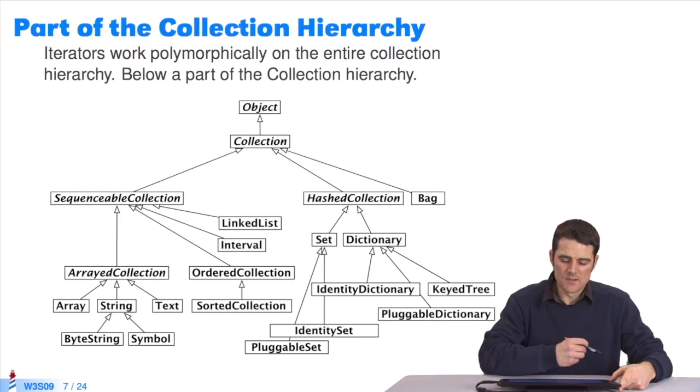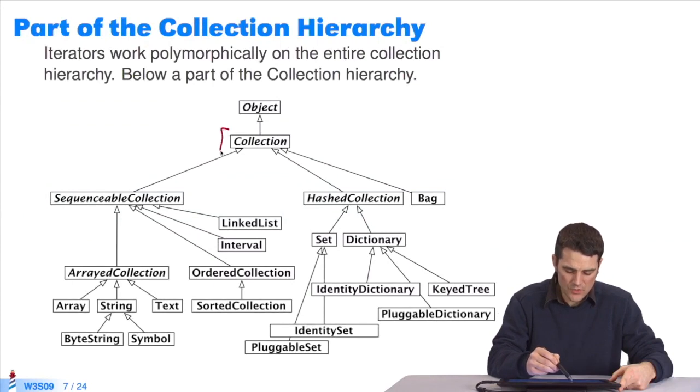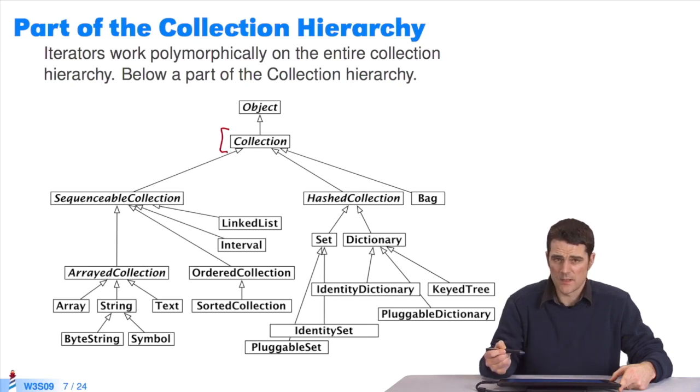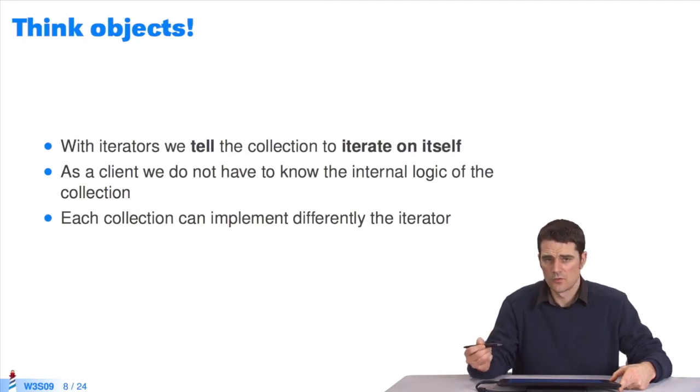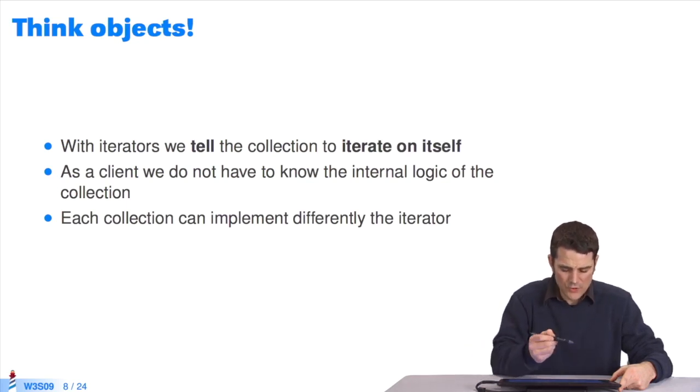In the hierarchy of Pharo collections, there's something crucial. All collections are polymorphic and inherit the class, so you have a common API. The upside is that the iterators will also work with most collections. It's really about thinking object. You tell the collection to iterate on itself. We don't know whether we're using a dictionary. We don't want to know about the internal logic of keys, values, etc. So you ask the collection to be nice and to process its elements.